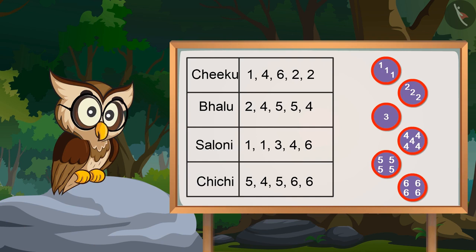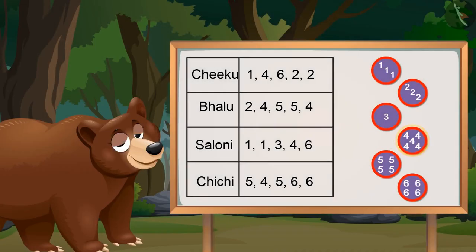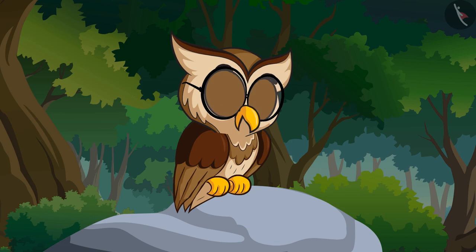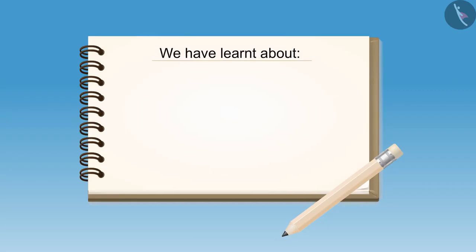Now tell me, which number came for the highest times and which one for the least? Four came for the highest times — that is, five times — and three came for the least, only once. Absolutely right! So kids, in this video, we have learnt about the collection and arrangement of data.